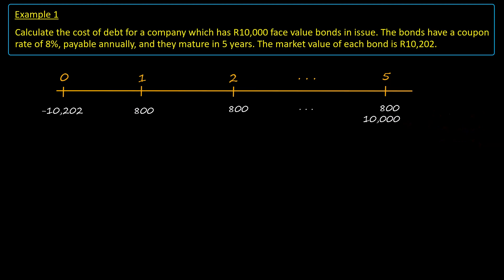All coupons and the face value are positive numbers. For the calculator inputs, the number of periods to maturity is entered as N, the negative of the market value today as the present value or PV, the annual coupon amount as PMT or payment, and the face value as the future value or FV. Solving for the discount rate, the calculator returns 7.5%.